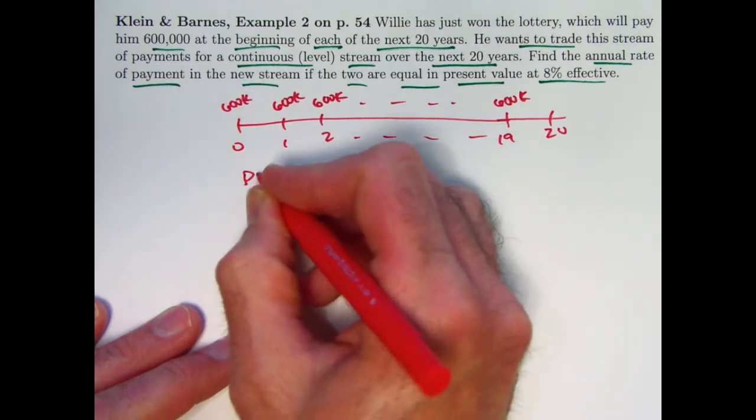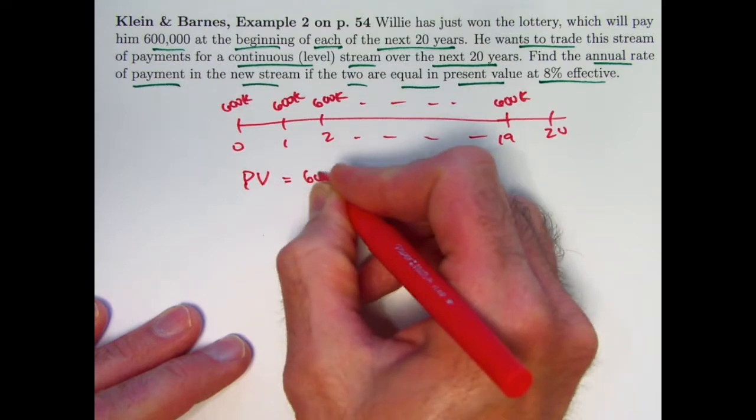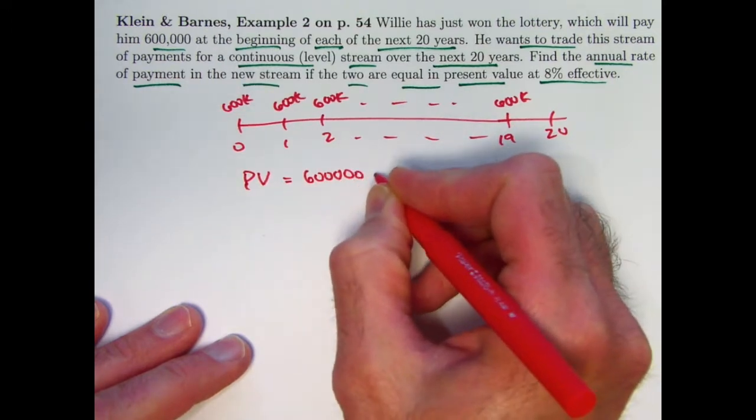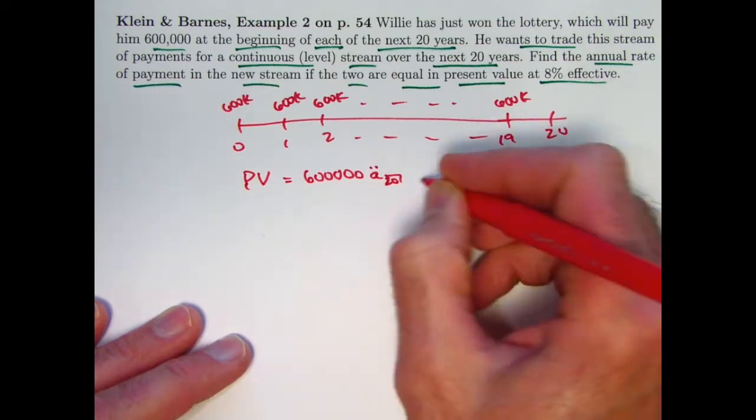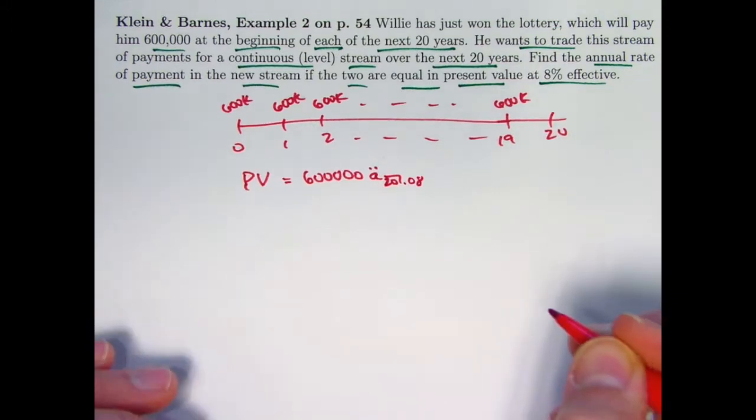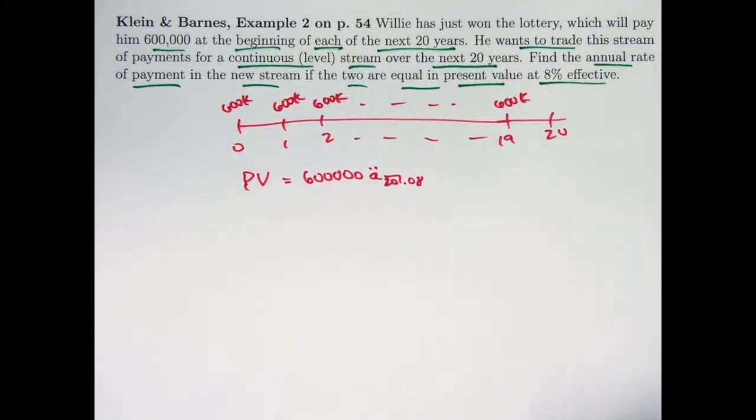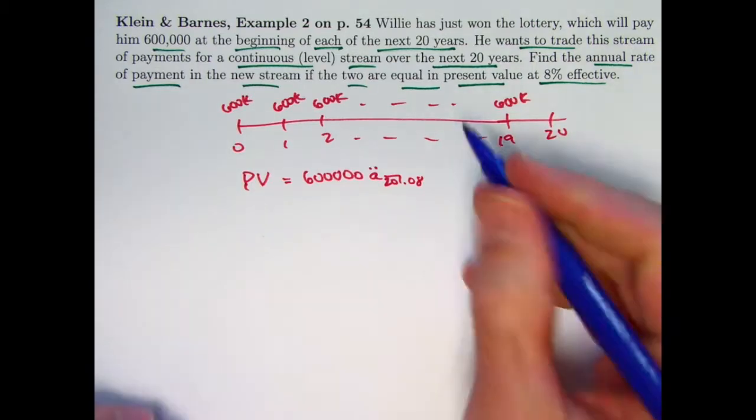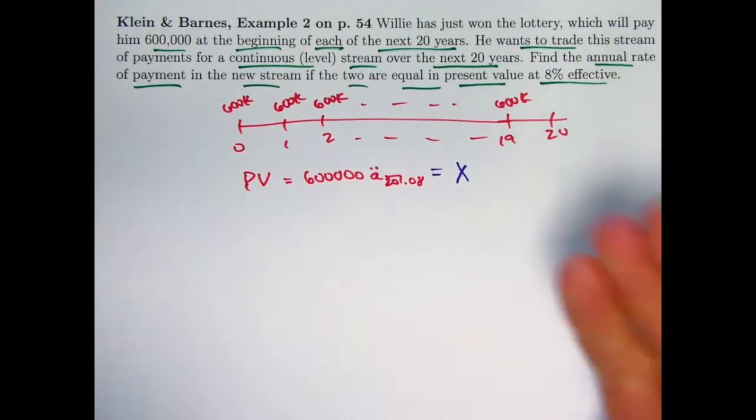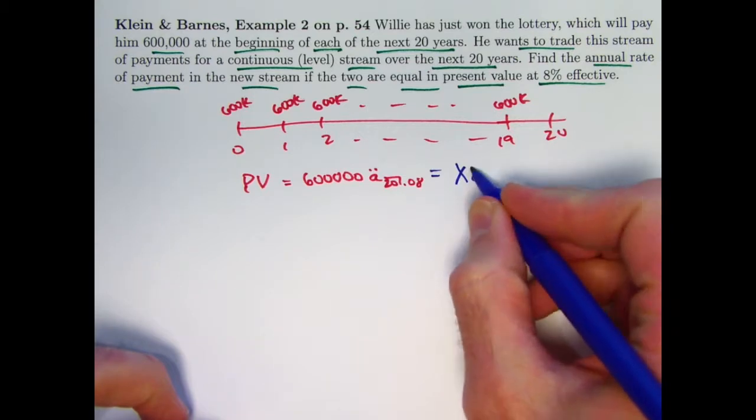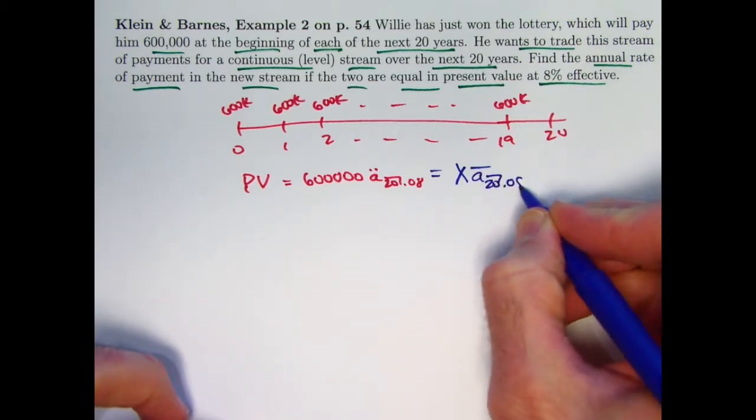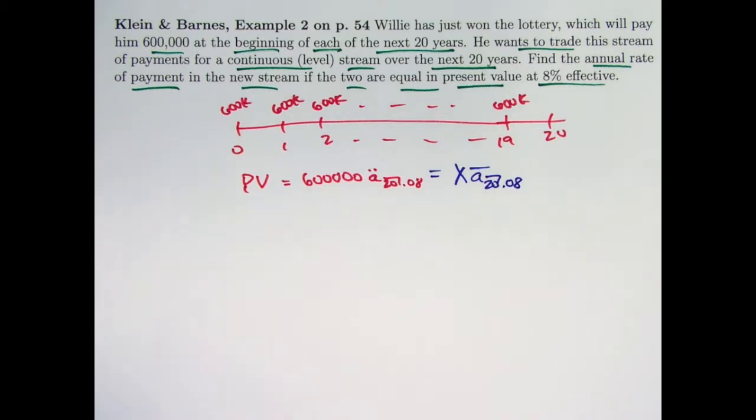The present value of this is going to be $600,000 symbolically times A double dot with 20 payments at this effective annual interest rate i of 0.08. To trade for an equivalent continuous stream, we are looking for some payment amount x as an amount of money per year, so that x times A bar sub 20 with interest rate i equals 0.08 would be the same. Okay, so we want to solve this equation for x. That would be the answer.